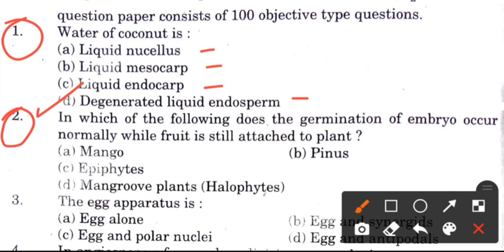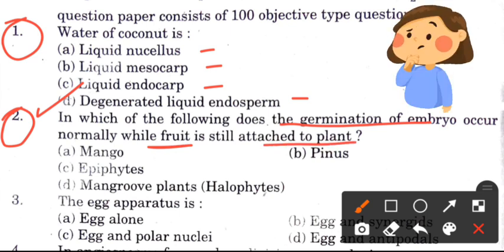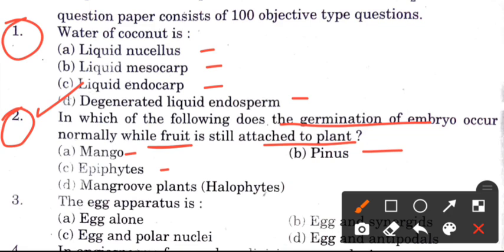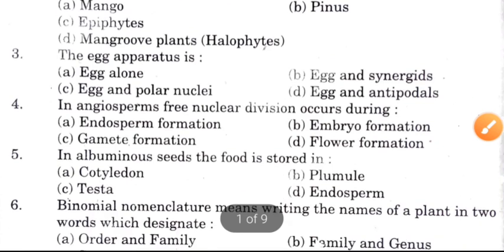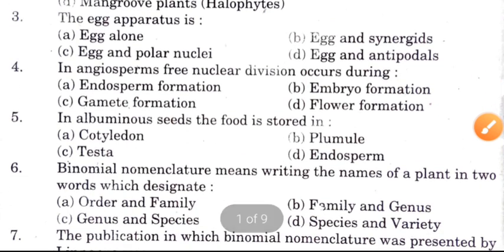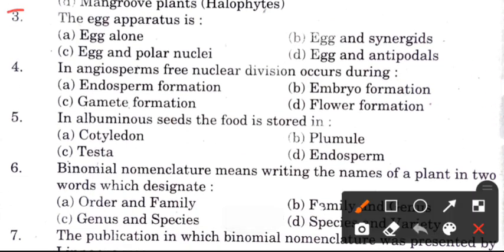Question 2: In which of the following does the germination of the embryo occur normally while the fruit is still attached to the plant? This is a viviparous germination question. Question 3: What is the egg apparatus?